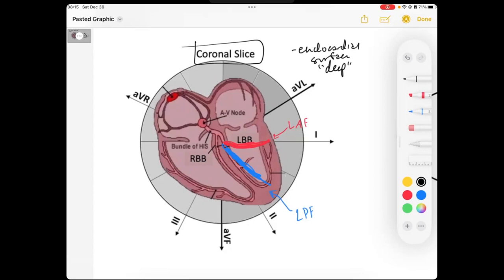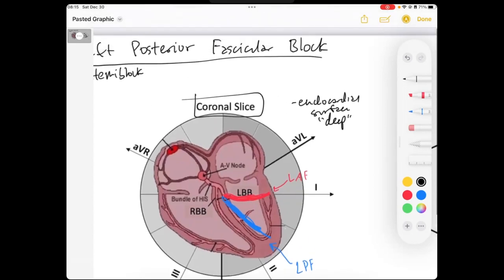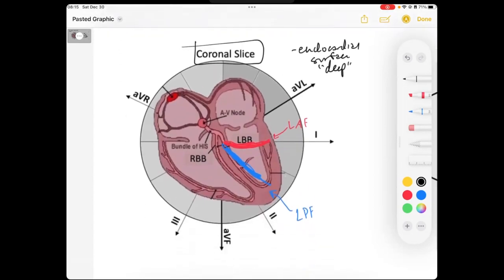And so today, when we go over the left posterior fascicle block, we're going to be talking about when this posterior fascicle is damaged or blocked, what is the morphology of the QRS going to look like? Because this is going to be depolarization of the ventricles.